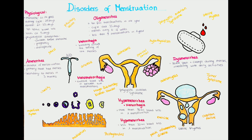The next menstrual disorder is oligomenorrhea. This is when too few menstruations occur in one year — either when menstruation occurs regularly but with long intervals, usually 6 to 12 weeks, or when a menstruation is sometimes skipped in the absence of pregnancy. The normal menstrual cycle is 21 to 35 days; if it is regularly longer than 35 days, it is considered oligomenorrhea, defined as 9 or fewer menstruations in one year.